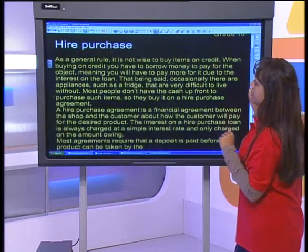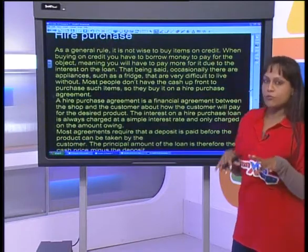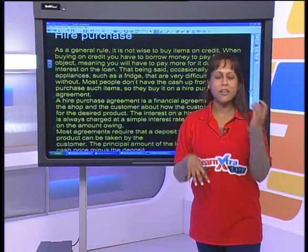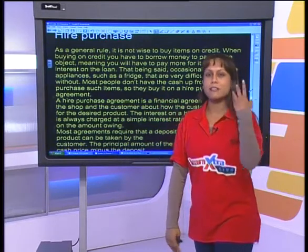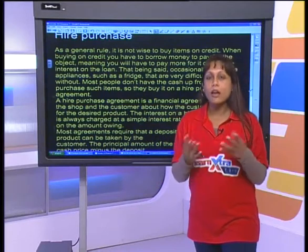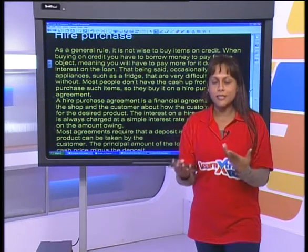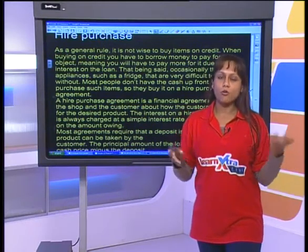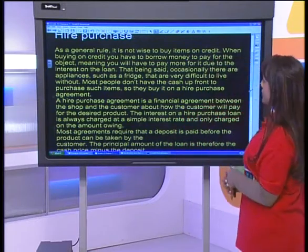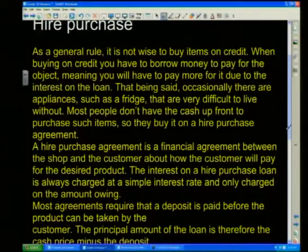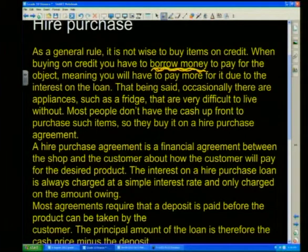The first thing we're going to look at today is hire purchase. As a general rule, it is never a good idea to borrow money — you don't want to have amounts outstanding and monthly payments. But sometimes you have no choice; sometimes you need a big appliance like a fridge. These loans are generally hire purchase loans, and when you buy on credit you have to borrow money and pay interest for the privilege.